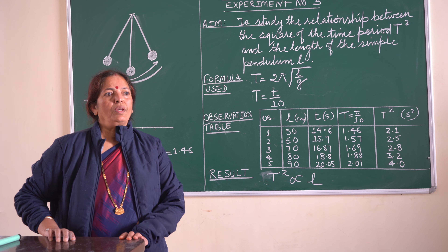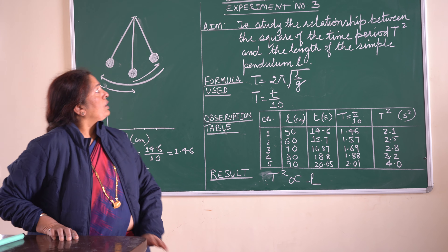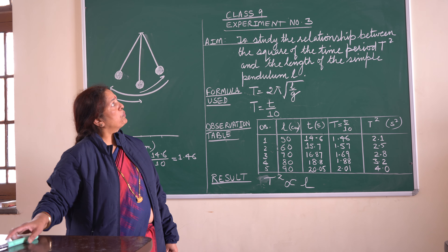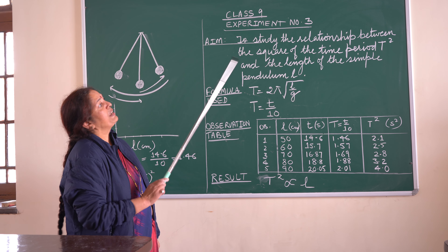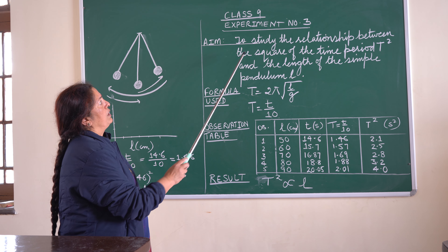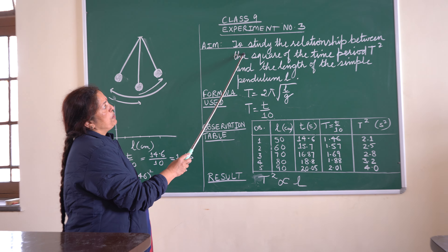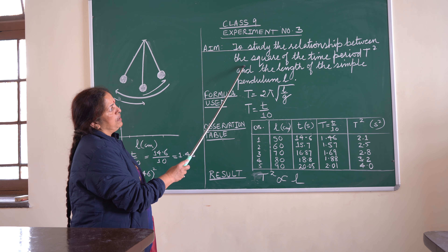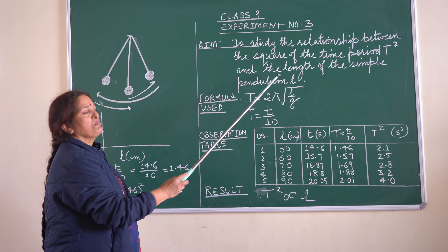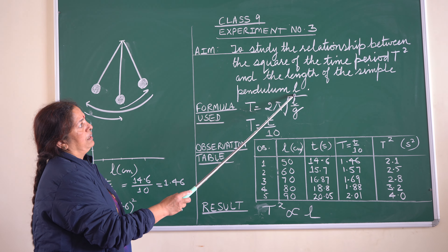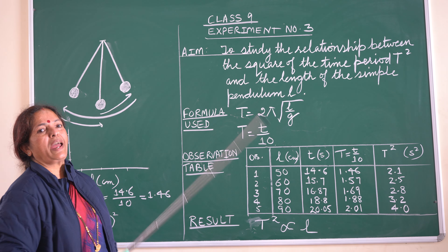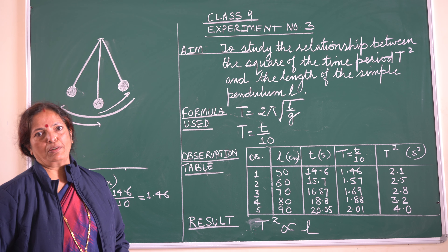Good morning boys. Today I am going to explain experiment number 3 to class 9. The aim of this experiment is to study the relationship between the square of the time period T² and the length of the simple pendulum L. That means we will be studying the relationship between T² and L of a simple pendulum.